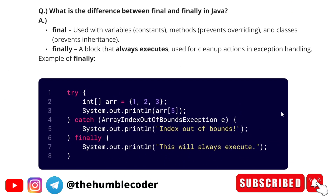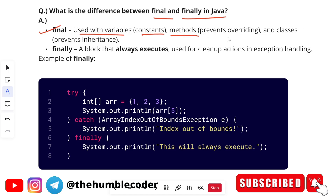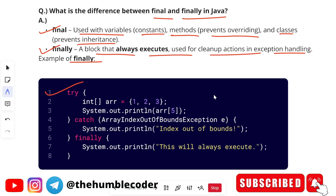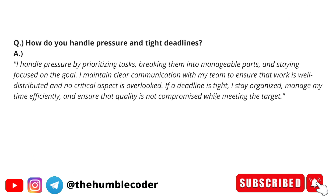The next question is: what is the difference between 'final' and 'finally' in Java? Final is used with variables, constants, and methods to prevent overriding, and with classes to prevent inheritance. Finally is a block that always executes and is used for cleanup actions in exception handling. I've also provided a code example — though the chances are rare that they'll ask you to explain via code, it's good to have it ready just in case.